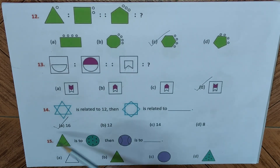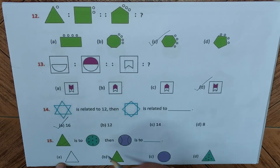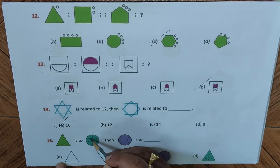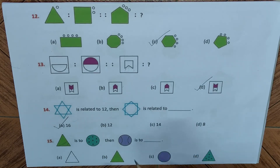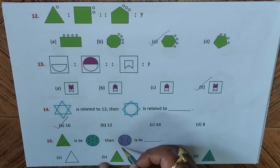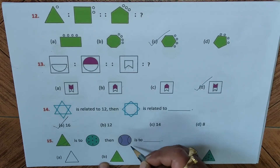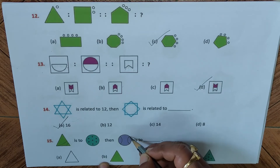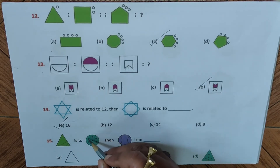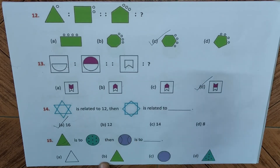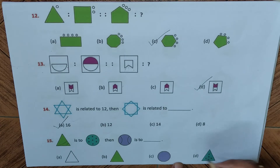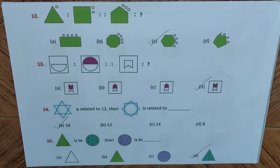Question fifteen: this is a triangle with two curved lines, which relates to a circle with black dots. Now we have a circle with curved lines, so we must find a triangle with black dots, which is answer D. Answer D is the right answer. Now let's go to the next page.